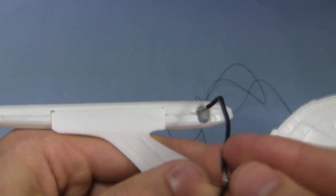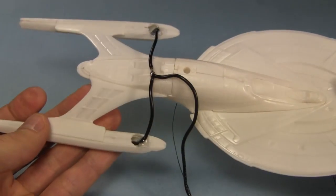I put the wire in the bottom hole. A little hot glue holds it in place. I do that for both nacelles.